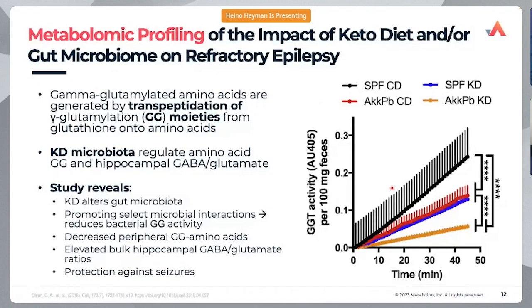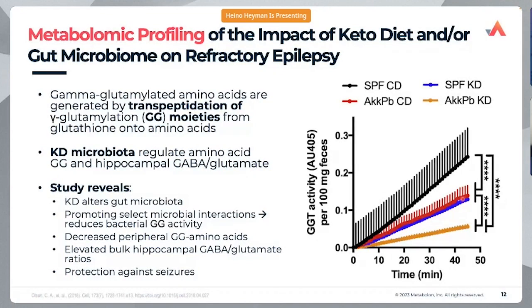Looking at GGT activity compared to the original analysis, mice on a chow diet have the highest level of GGT activity with no seizure protection. With keto diet only and supplementation of bacteria or probiotics, there is a similar reduction in GGT activity and an increased level of seizure protection. Using both the ketogenic diet and supplementing with these bacteria conferred the highest level of inhibition of GGT activity, supporting the whole mechanism.